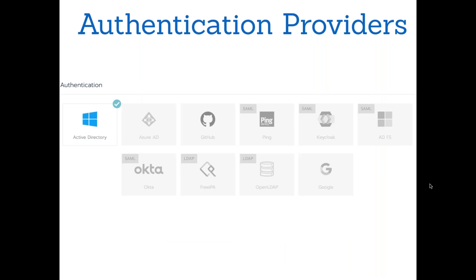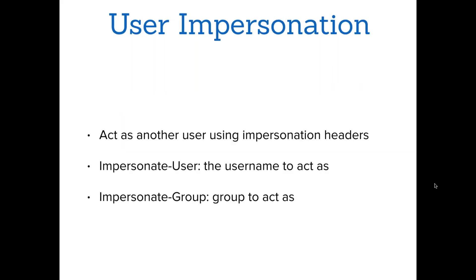We support a variety of authentication providers: LDAP-based providers such as Active Directory, FreeIPA, and OpenLDAP; SAML providers like PingFederate, Keycloak, ADFS; and starting from version 2.3 we're also adding a Google OAuth provider. Another key Kubernetes concept we leverage is user impersonation — the ability to act as another user — achieved through the headers 'Impersonate-User' and 'Impersonate-Group'.